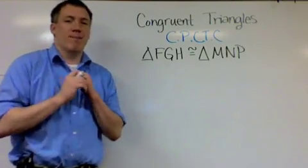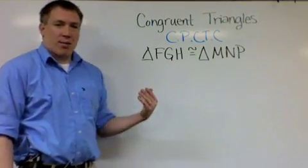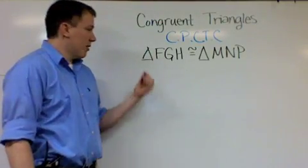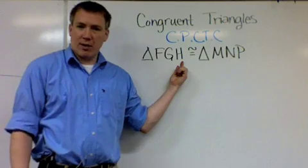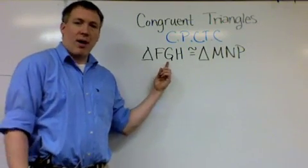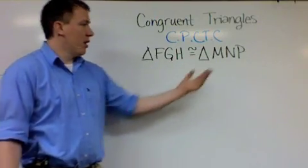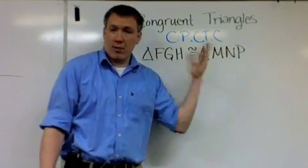So let's use that here. Let's start with the corresponding angles. Every triangle has three angles, and we could represent them by the vertices. So here's one vertex, here's another vertex, there's another vertex in my triangle. So angle F, angle G, angle H—there would be three angles in my triangle here. The three angles in this triangle would be M, N, and P.